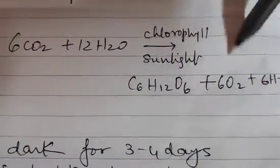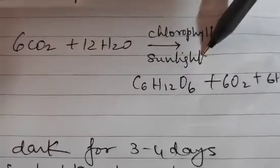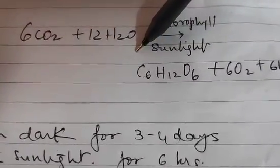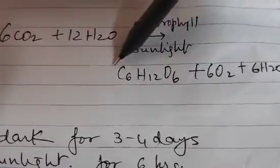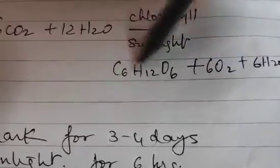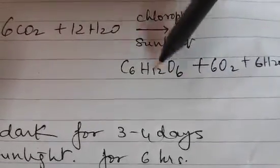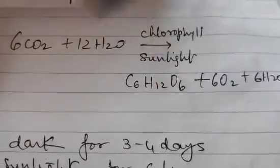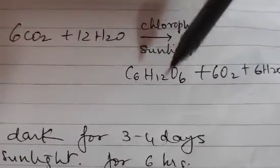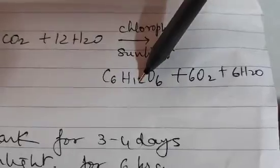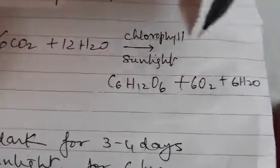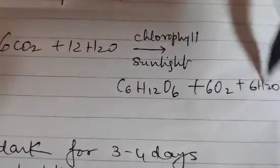Sunlight is another important factor because solar energy is trapped and incorporated, helping carbon dioxide and water to be converted into food - glucose, or carbohydrate in general. Carbon dioxide and water, in the presence of sunlight with the help of chlorophyll, are converted into carbohydrate, liberating oxygen and water. This is the photosynthetic equation.